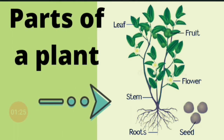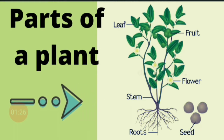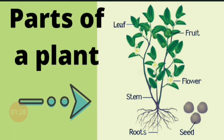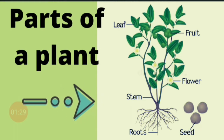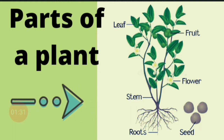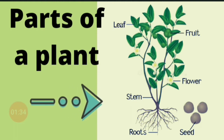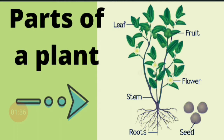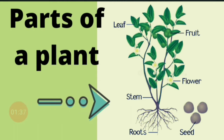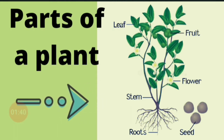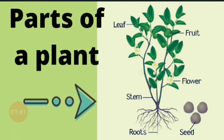Poodhe ke alag-alag hissos ke baare mein, hum kaksha doosari mein pehle hi padh chuke hain. Toh, fata-fata revise kar leen. Aapko yaha paur — roots, stems, flower, fruit, leaf aur seeds — yeh sabhi poodhe ke alag-alag parts hote hai.